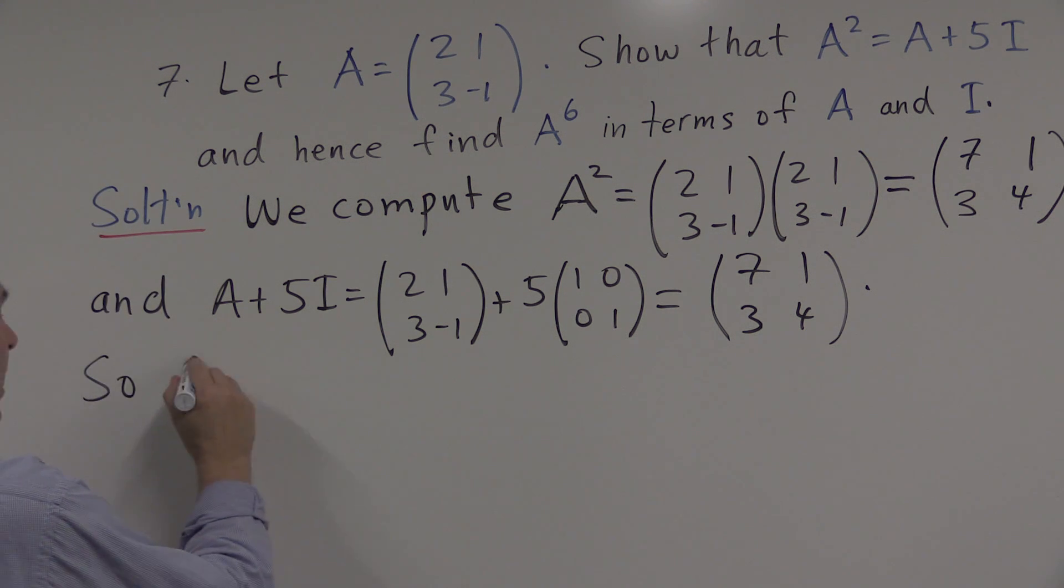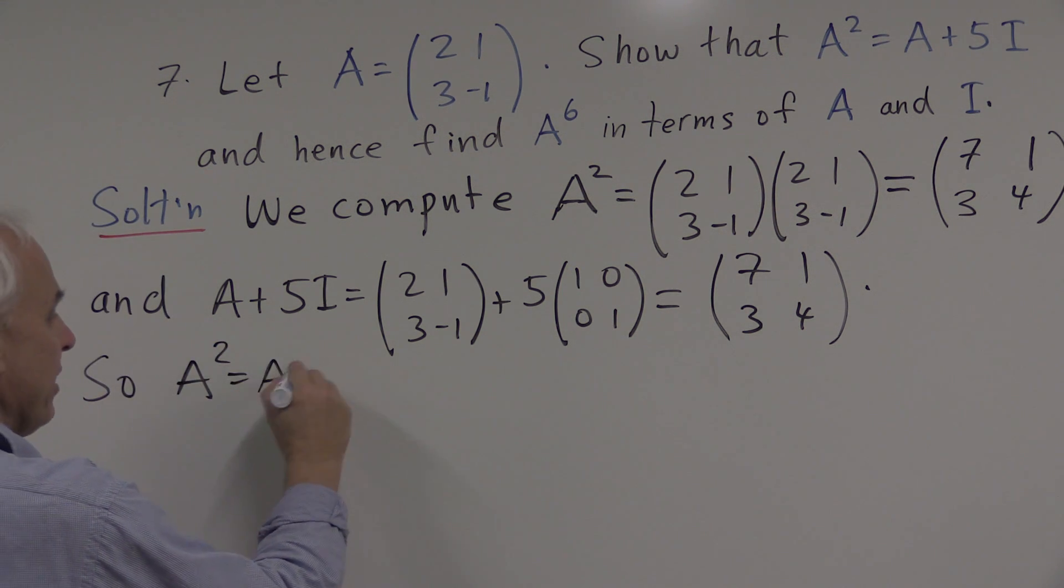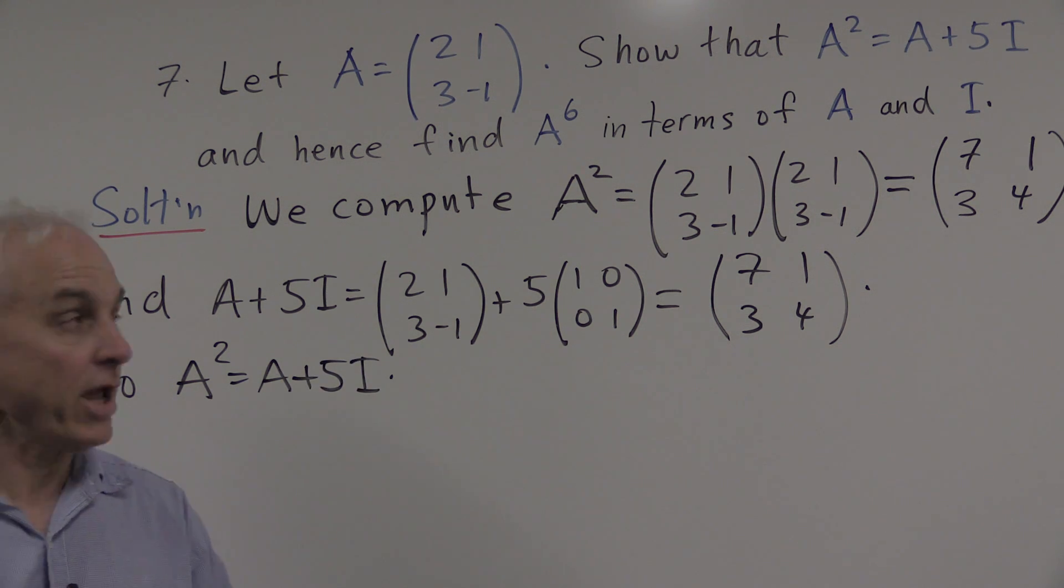So A squared equals A plus 5I. Now let's have a look at A to the sixth. We want to express A to the sixth in terms of A and I.